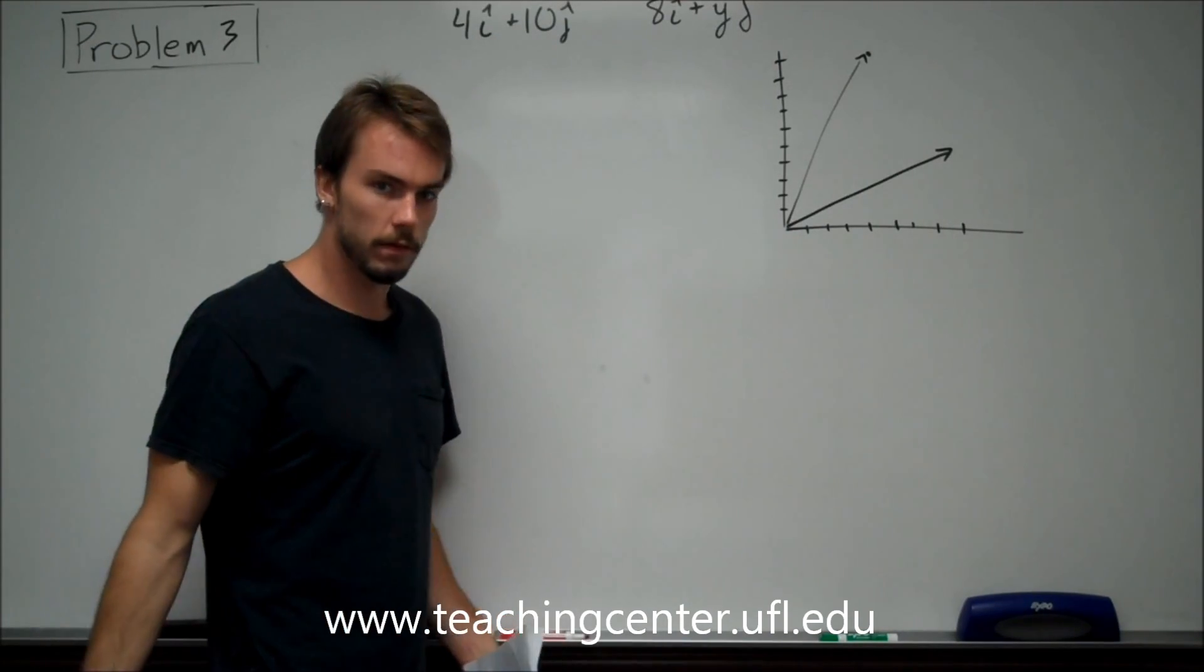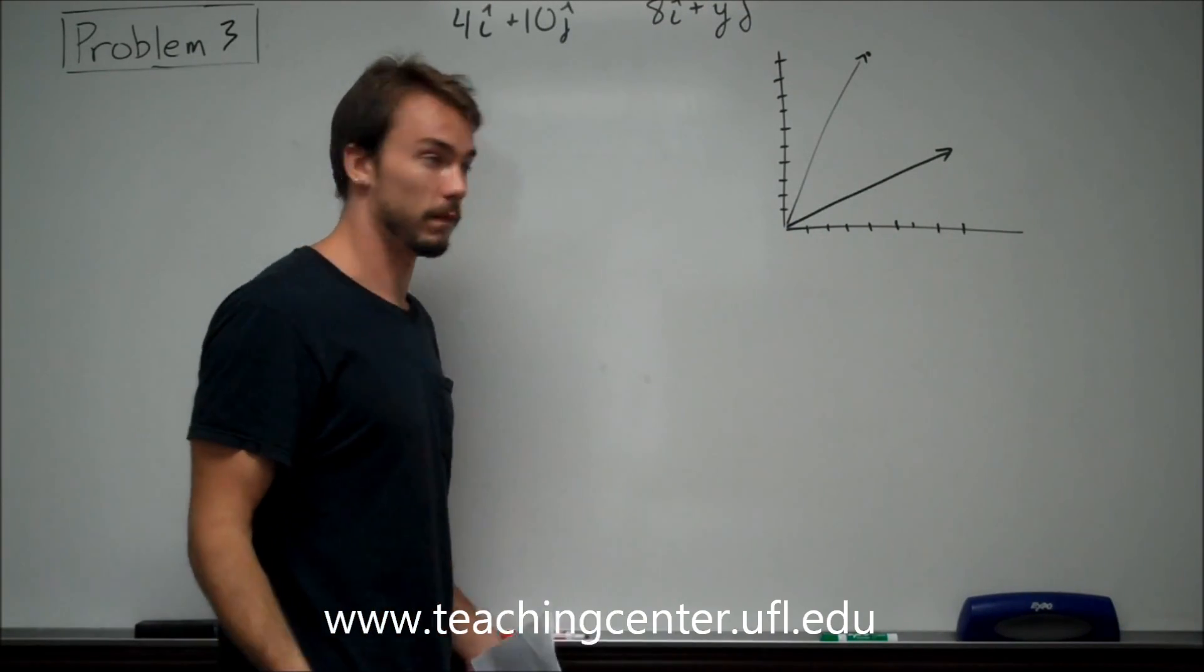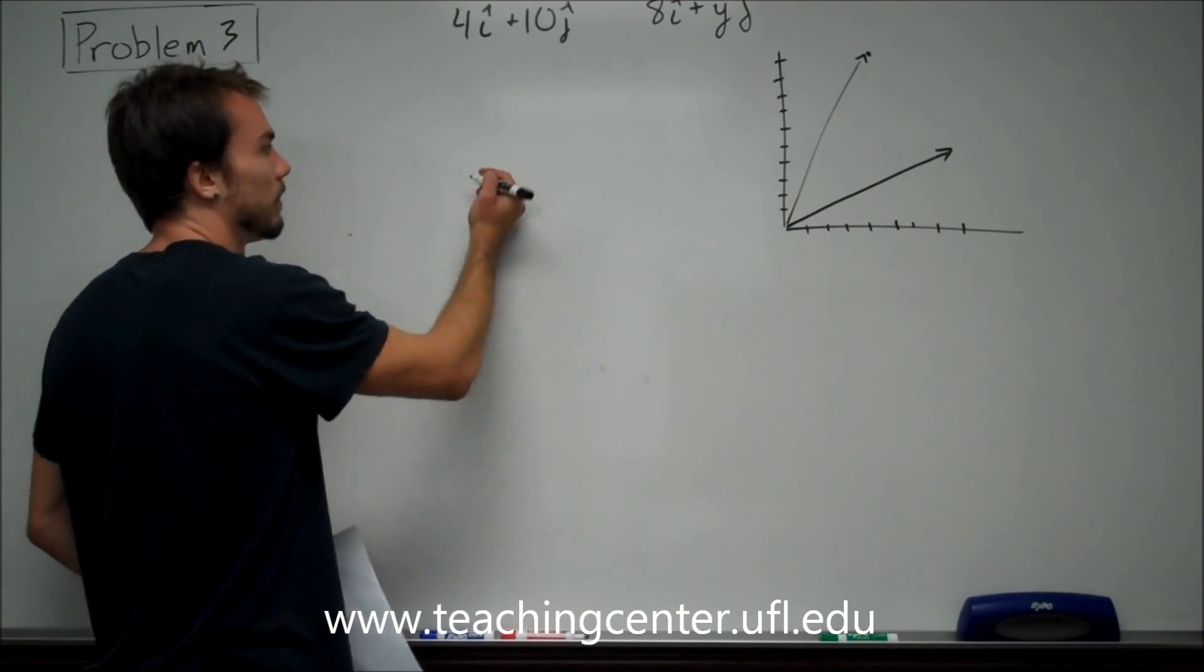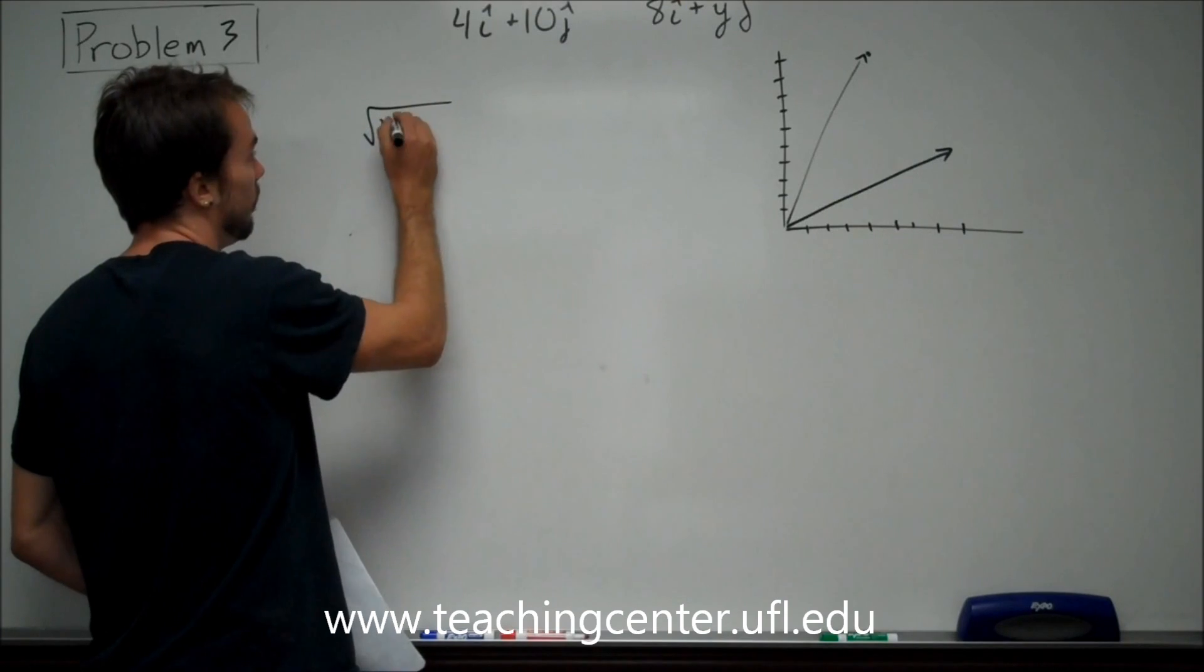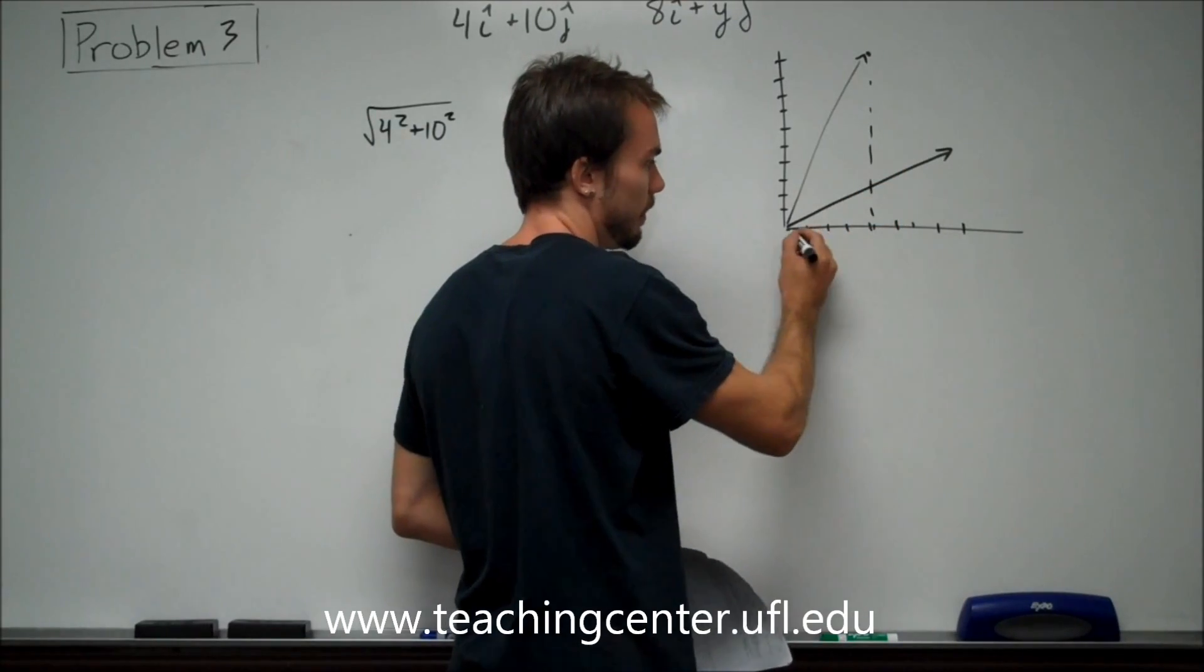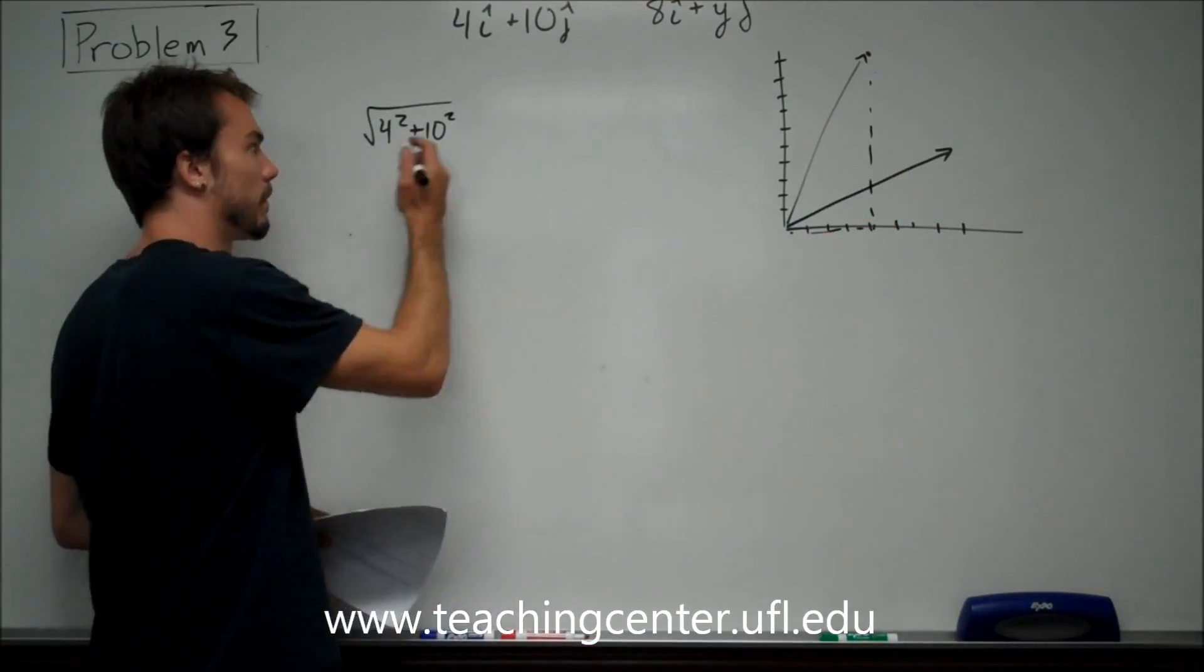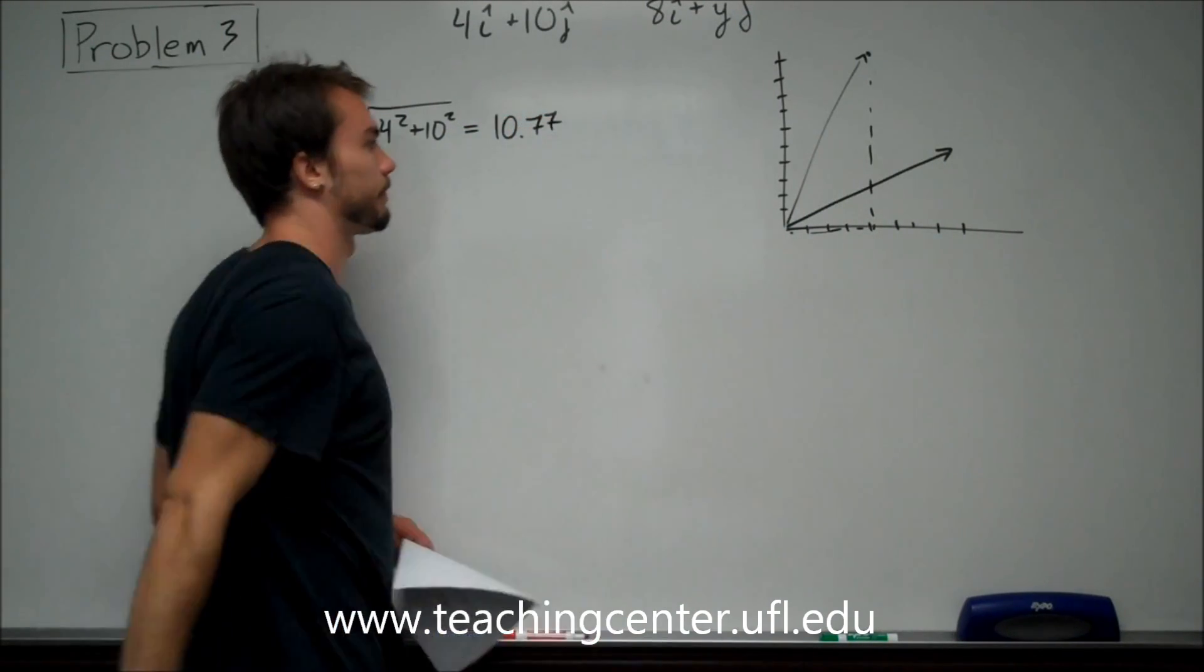If you have the X and Y components, you have the two components that are perpendicular to one another. So all you have to do is use Pythagorean theorem. So we can say that the magnitude of this vector is going to be basically square root, 4 squared, plus 10 squared. We know this side is 10. We know this side is 4. Right triangle. It's all for the magnitude. It's going to be about 10.77.